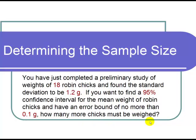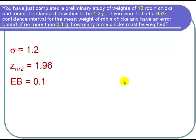Let's start by stating our cast of characters. We're given that the standard deviation of these 18 chicks is 1.2 grams, that's our sample standard deviation, and we're going to use 1.2 grams as a point estimate for our population standard deviation, so sigma is about equal to 1.2.